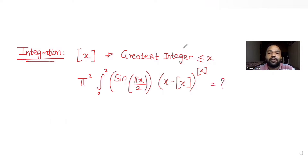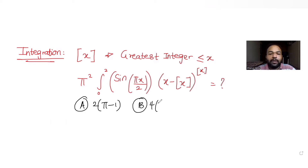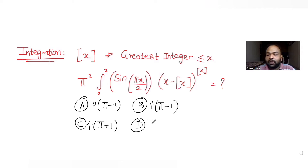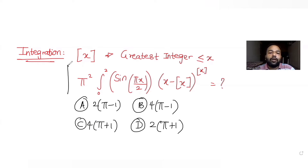We need to find the value of this entire expression. The options given are: option one is 2π minus 1, option two is 4π minus 1, option three is 4π plus 1, and the last option is 2π plus 1. We need to figure out which one of the four options is the correct answer.